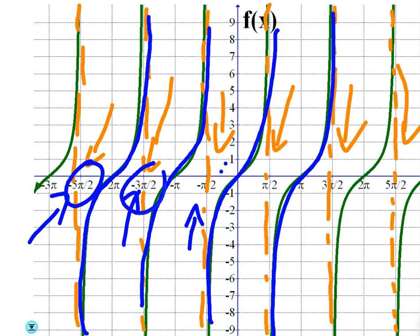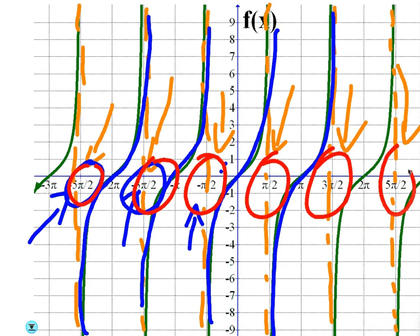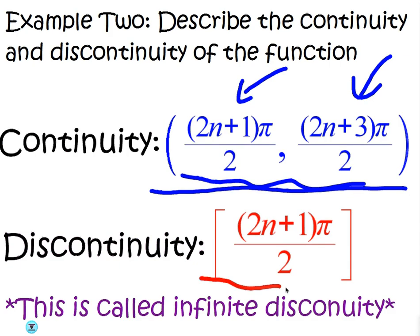But at all of these x values, it's discontinuous. So if you just want to write discontinuous at all those, that's fine too. Or you can just write the formula.